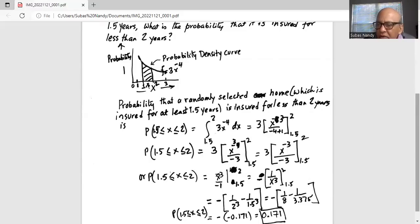And the whole thing, the whole operation inside the parenthesis is minus 0.171. So 2 minuses make it positive. So probability x, the random variable between 1.5 and 2, the probability of that is 0.171.